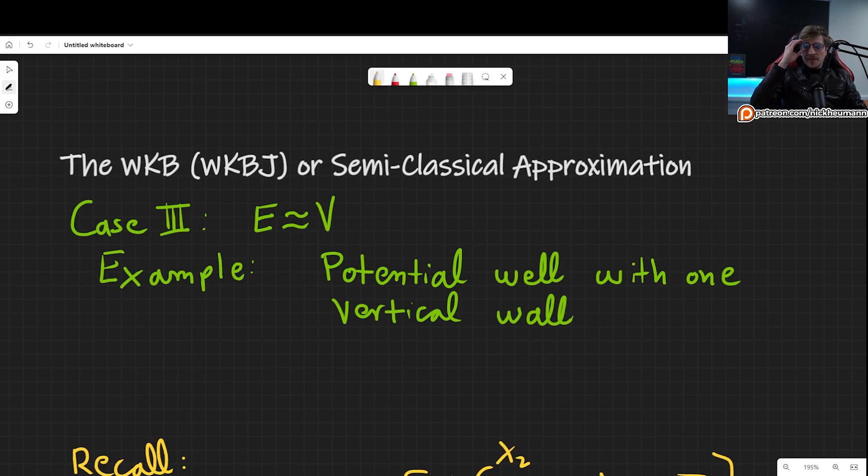Welcome! In this video we will discuss a quick example for the third case of the WKB or semi-classical approximation, which is of course the case where the energy is comparable to the potential.